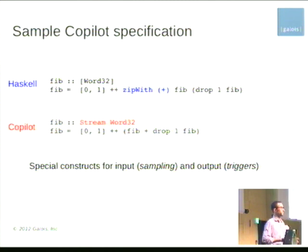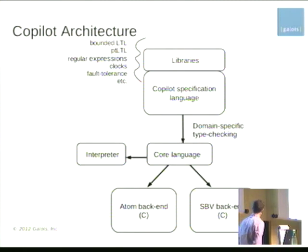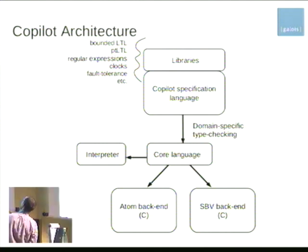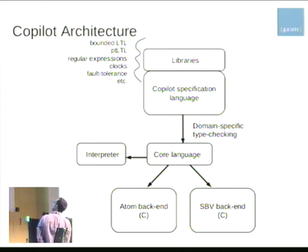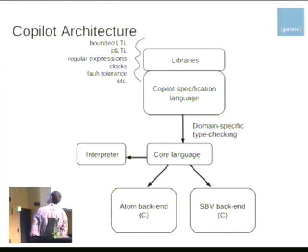Due to time constraints, I won't go into all language constructs, but Copilot has the ability to sample the external world — think of what's available at the C level: sampling external C variables, calling C functions and using their return values, arrays, and so on. There's also a notion of output via triggers, indicating when a property has been violated. The architecture is what you'd expect for an embedded DSL, with libraries on top of the specification language for things like bounded LTL, past-time LTL, and regular expressions.